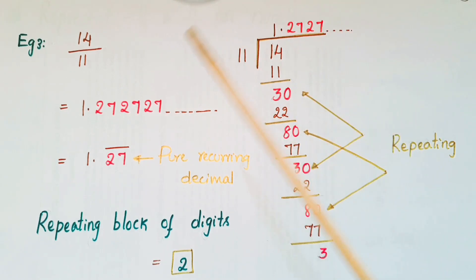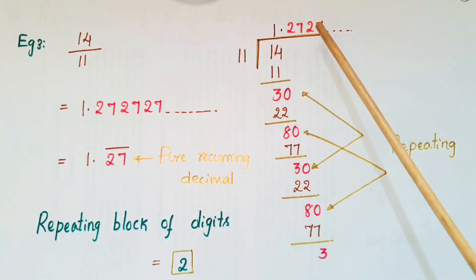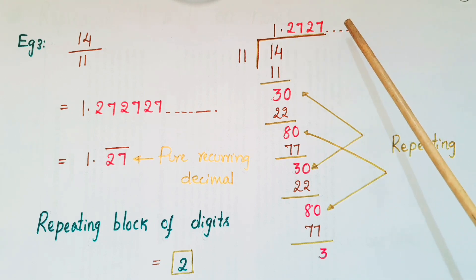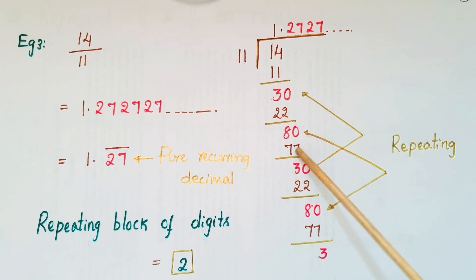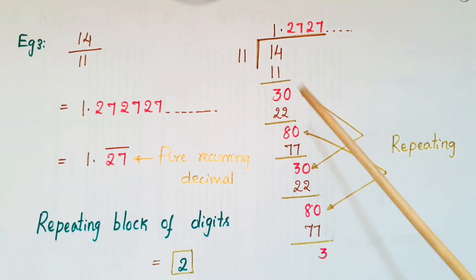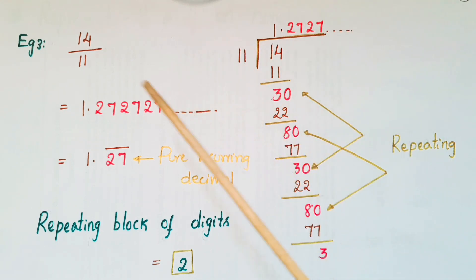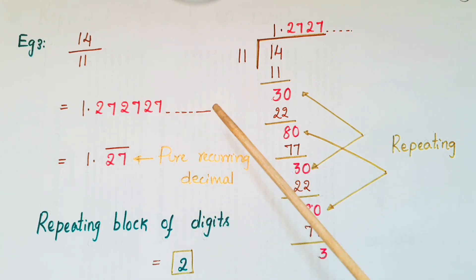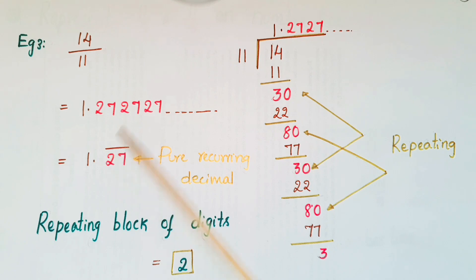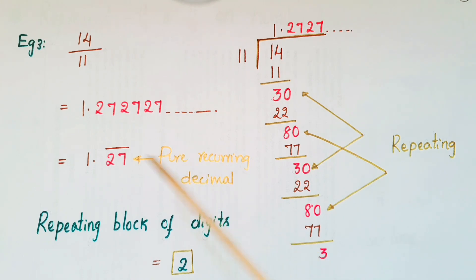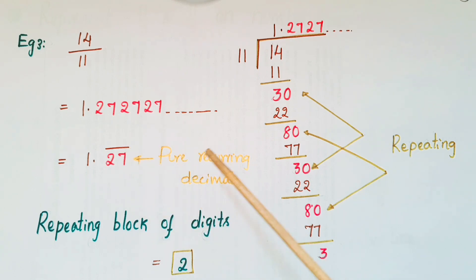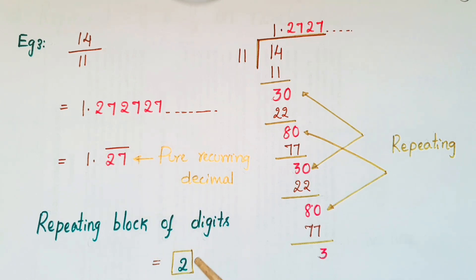Another example: 14 by 11. Divide 14 by 11 and you get a quotient of 1.2727, and so on. The repeating steps are 30, 22, 80, 77 — repeating, so the digits 27 repeat in the quotient. We write 14 by 11 as 1.27 bar, putting the bar over two digits. This is called a pure recurring decimal — after the decimal point all digits repeat. The repeating block of digits is equal to 2.